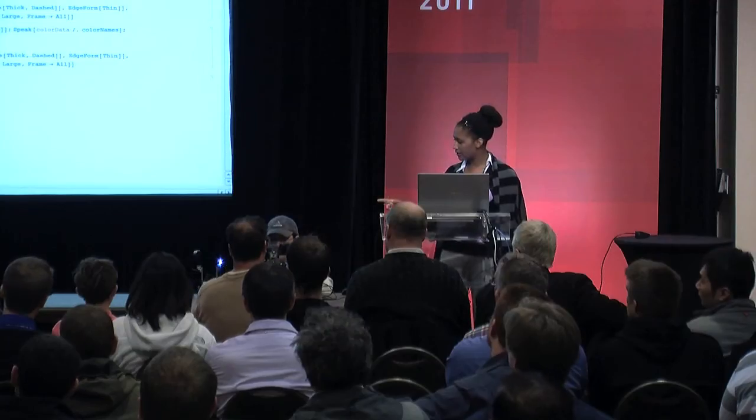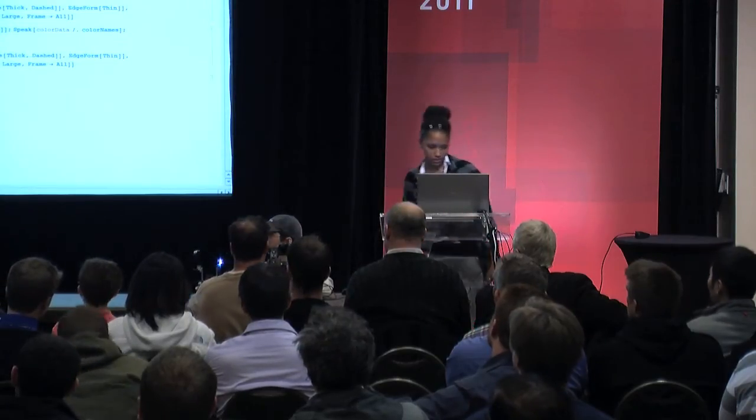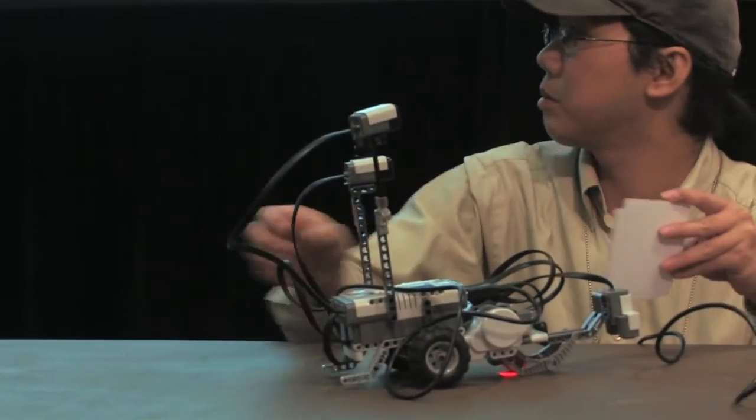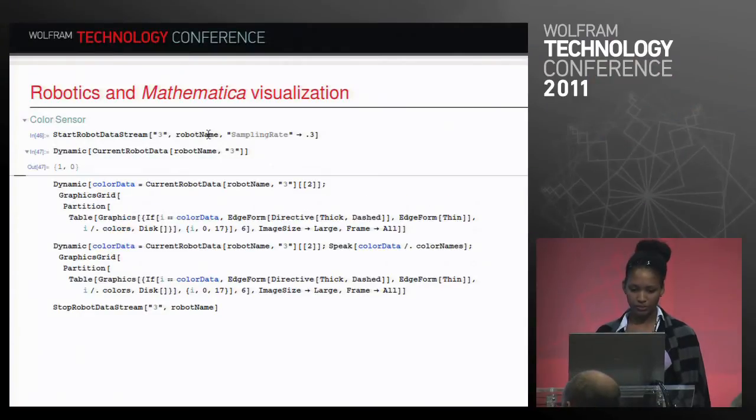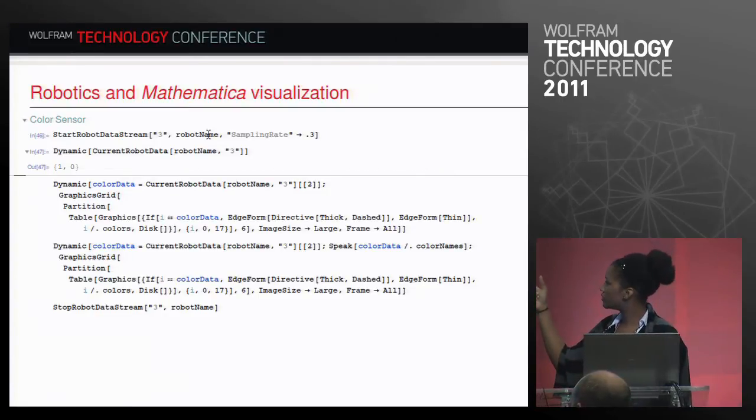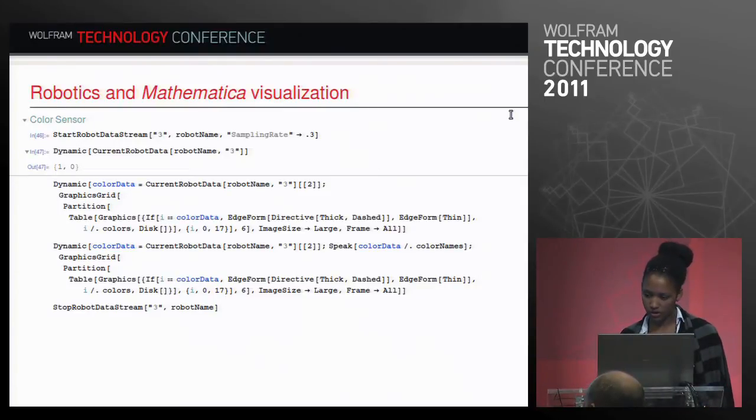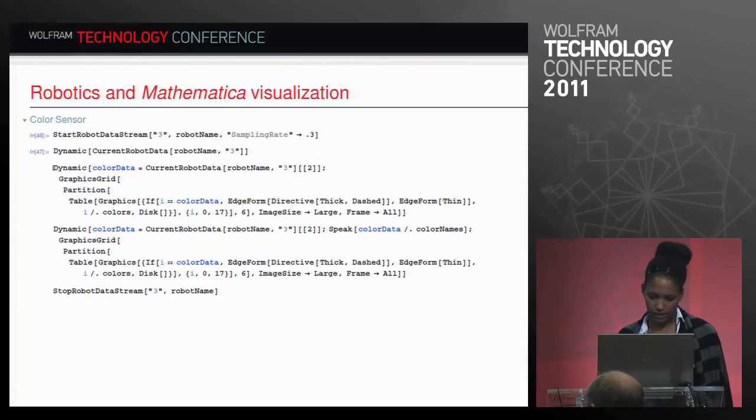But what else can we bring in? What advantage do we get from using Mathematica? Now that we have access to this robot and all the data it gets, we can now make use of some of Mathematica's inbuilt features. This sensor here with the light, this is a color sensor. We're going to start streaming from the color sensor. If we put that in a dynamic, you see the raw data of what we get from the sensor. That's not really very helpful.